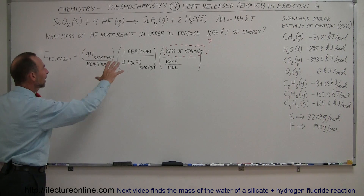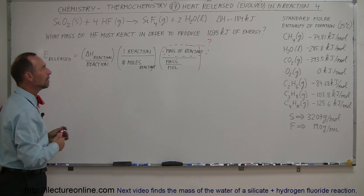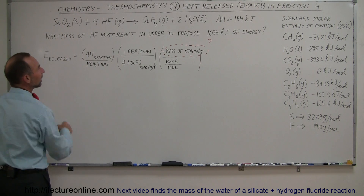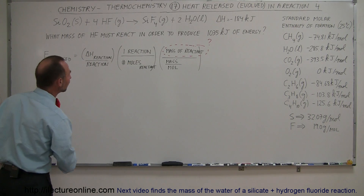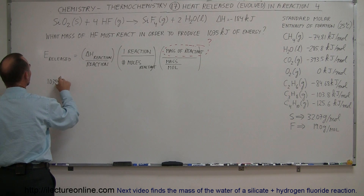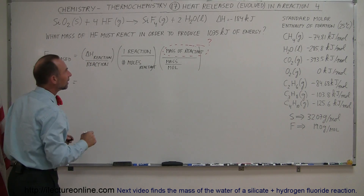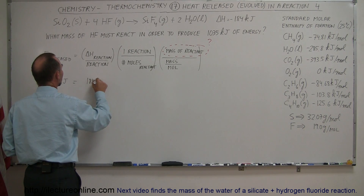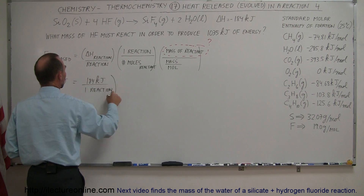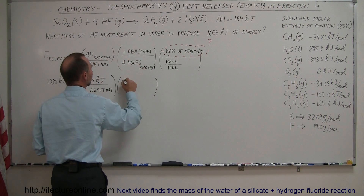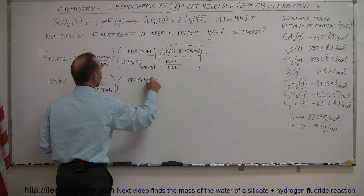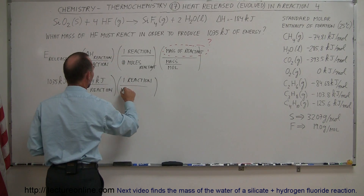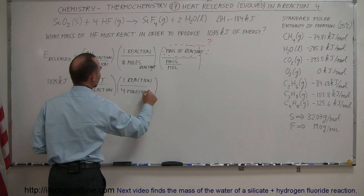What we can do is leave the equation as is, plug everything else in, and then move the portions of the equation until the unknown is isolated on one side. They give us energy released — 1035 kilojoules — and that equals the energy in the reaction: 184 kilojoules per one reaction. We multiply that times one reaction divided by four moles of hydrogen fluoride.